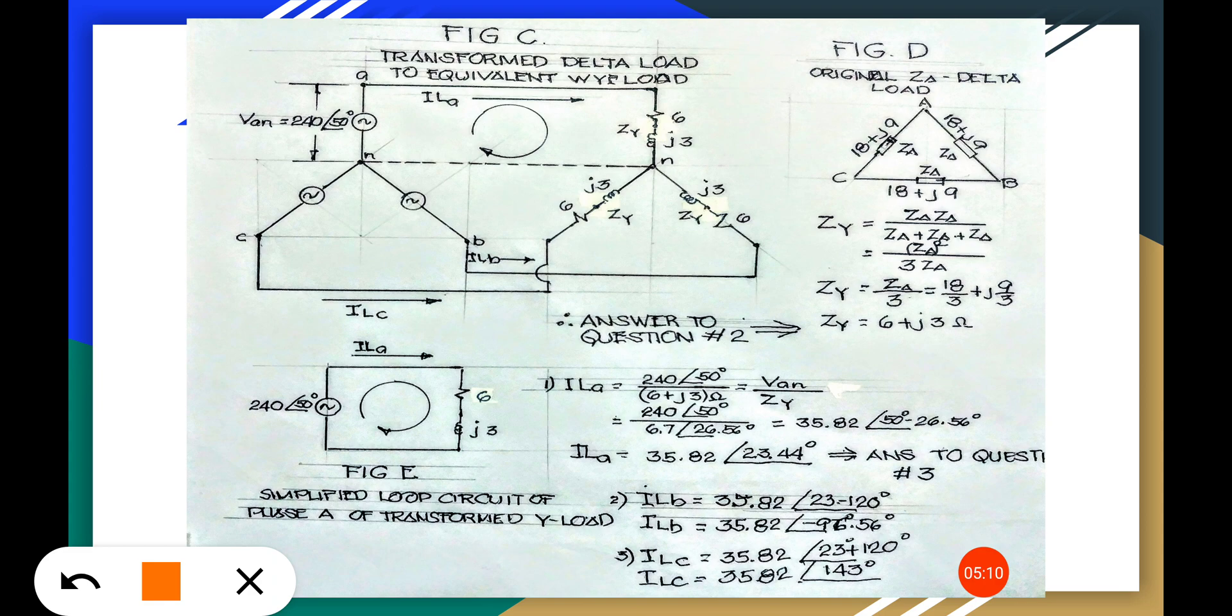Now we have to get this thing first, to connect this new neutral here. Now we find this neutral, this is zero voltage actually, so we can simplify this closed loop circuit for the phase A transformed load.